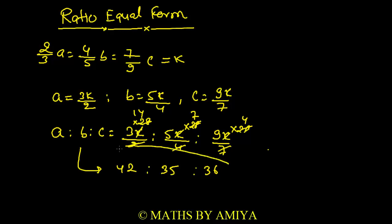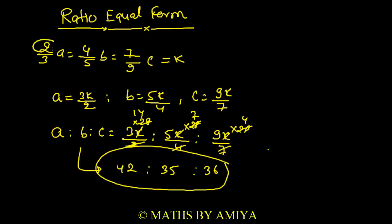By this we can solve any question the best way possible. If we have variables in equal form, we should convert to integral form and solve the question. Now, the shortcut: in the integral form we take LCM of the denominators, but in the equal form we take LCM of the numerators.